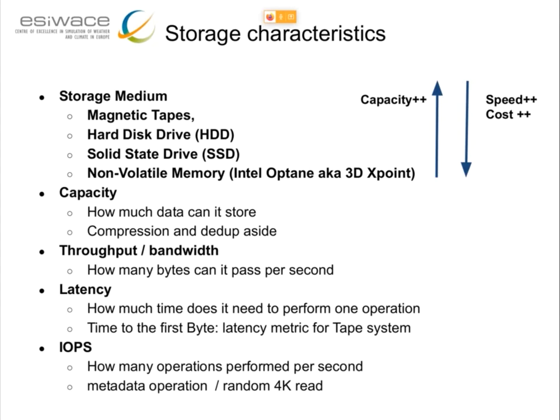Throughput and bandwidth are two words we use in a completely interchangeable way — this is a measure of the number of bytes the system is able to move per second. Latency is slightly more complicated: it's related to time, and specifically what is the time to perform a single operation. There is asynchronous operation; some operations are more expensive than others. Some media have their own specific latency terms. For instance, for tape, there is this notion of time to the first byte — how many seconds do you need to access the first byte of a file on tape, knowing that once the tape is in and the head is rightly positioned, the first byte can be read after several seconds, but the next gigabyte is going to be fetched much, much faster.